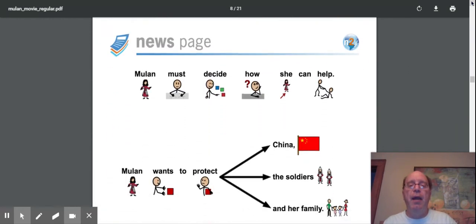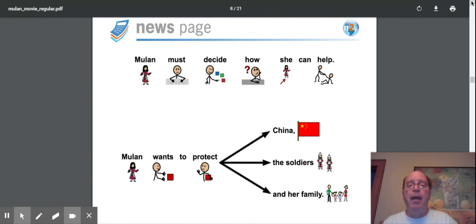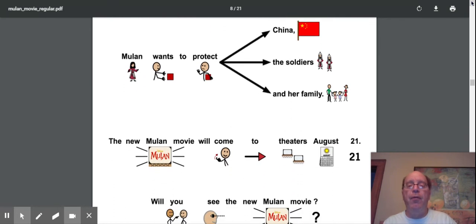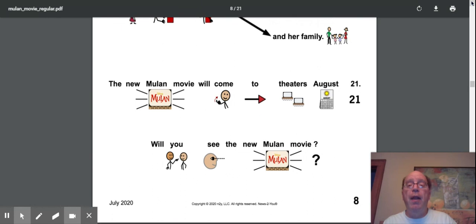Mulan must decide how she can help. Mulan wants to protect China, the soldiers, and her family. The new Mulan movie will come to theaters on August 21st. Will you see the new Mulan movie?